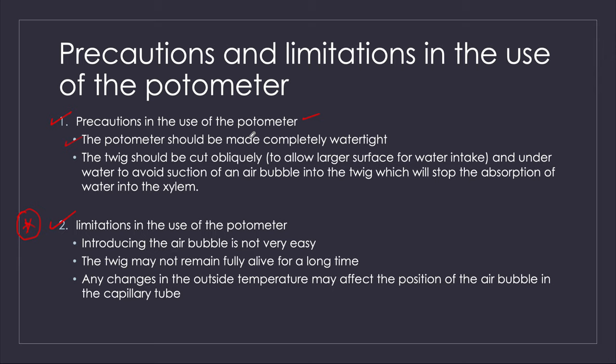The potometer must be completely watertight so there is no extra water coming in. The second precaution is that the twig should be cut obliquely — at an angle — to allow a larger surface area for water intake, and to avoid suction of an air bubble into the water which would stop absorption of water into the twig.